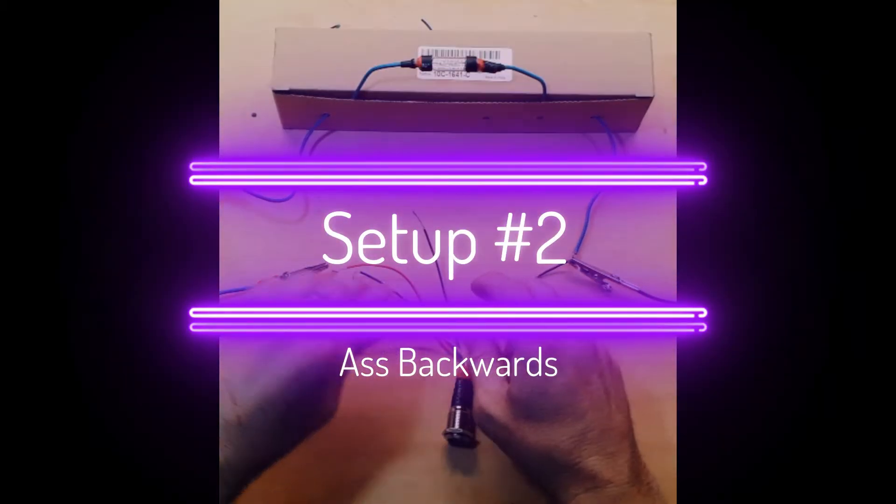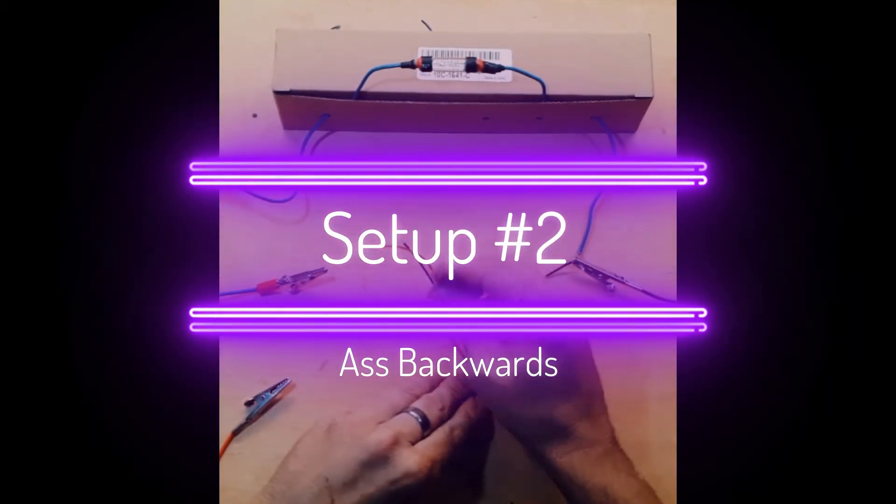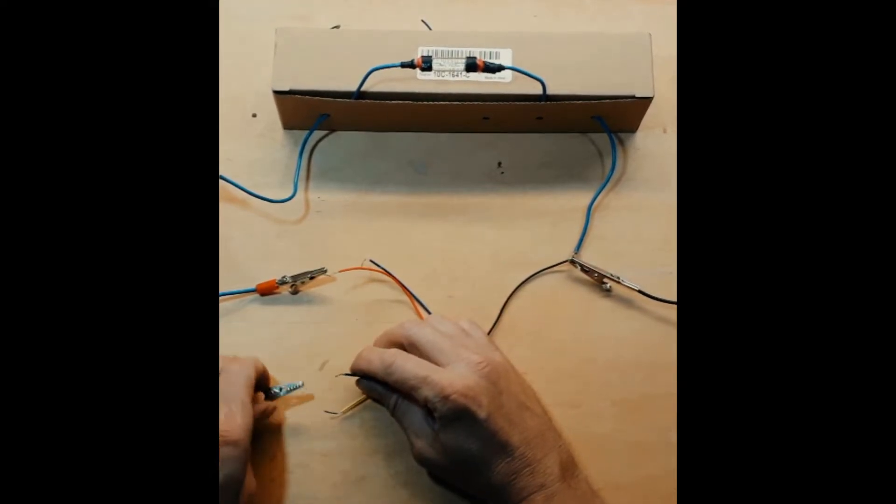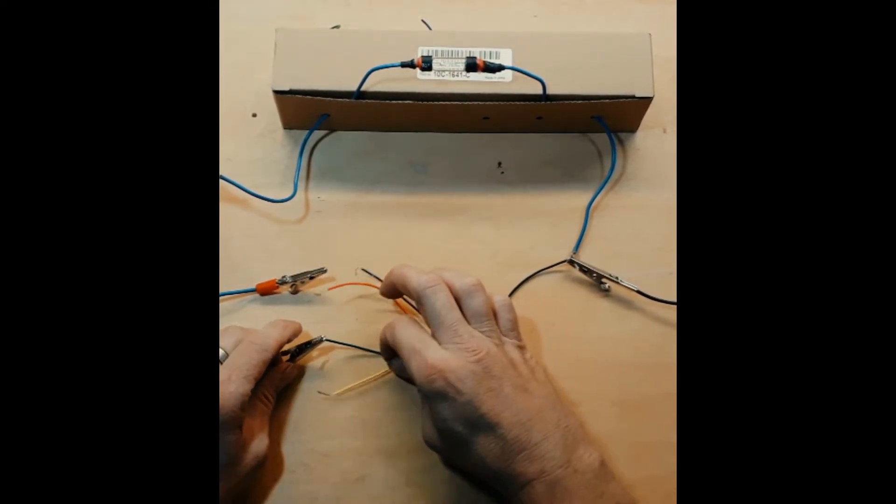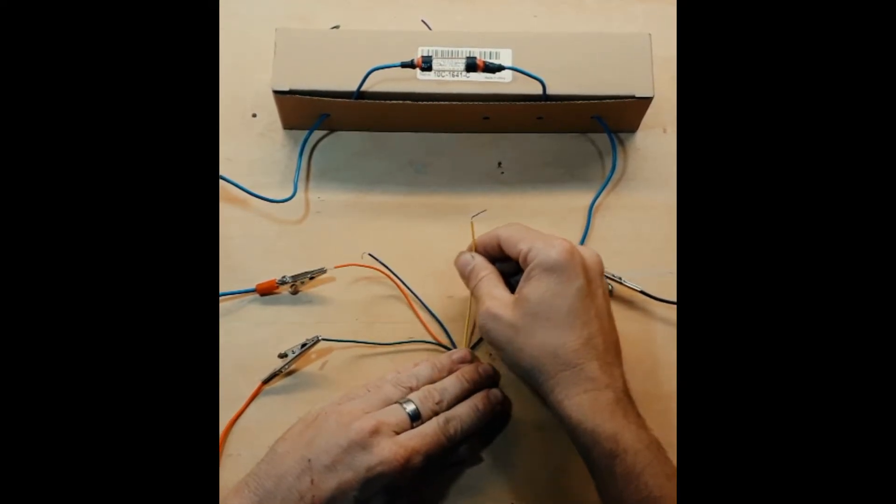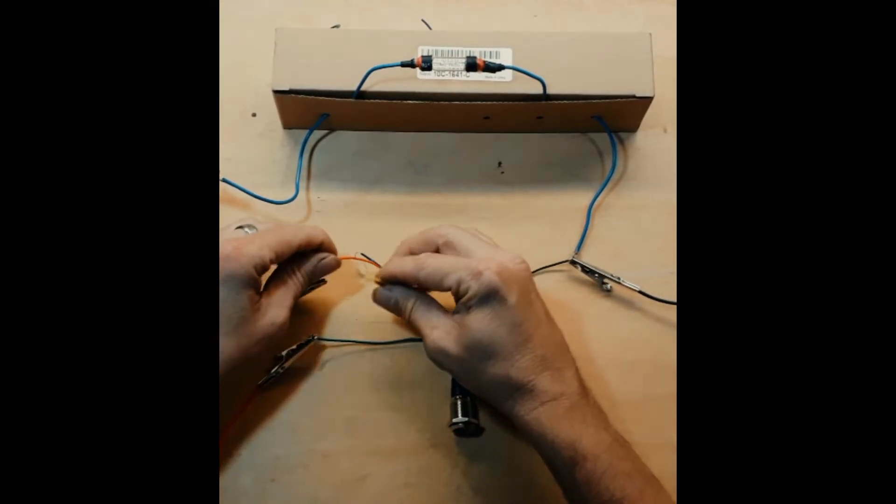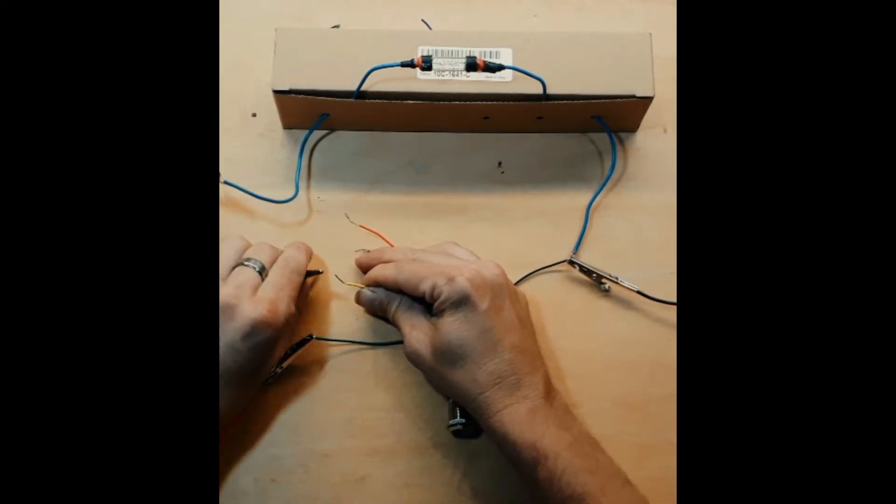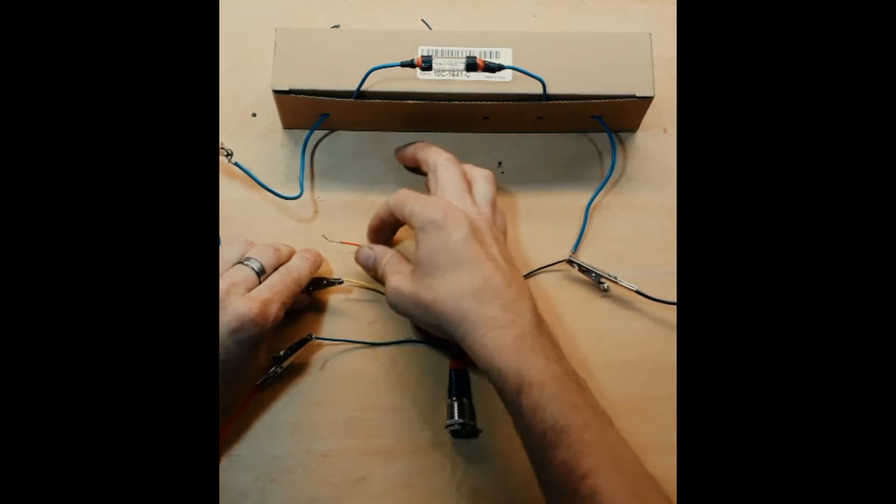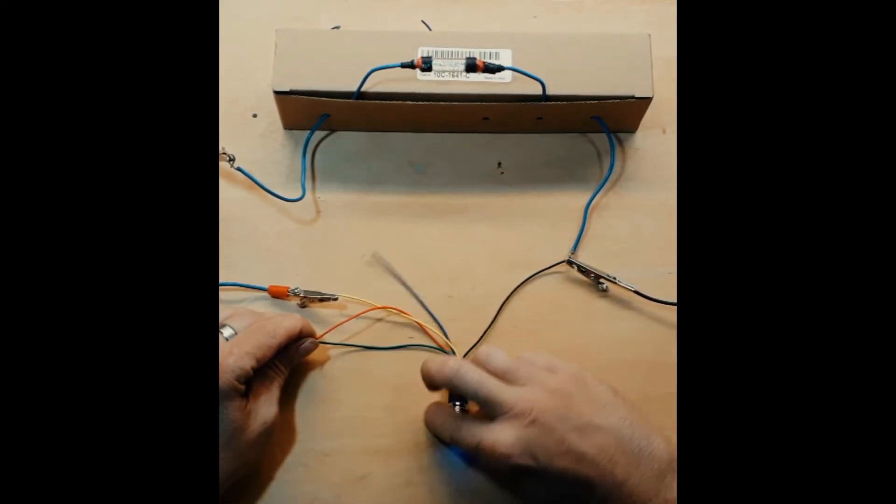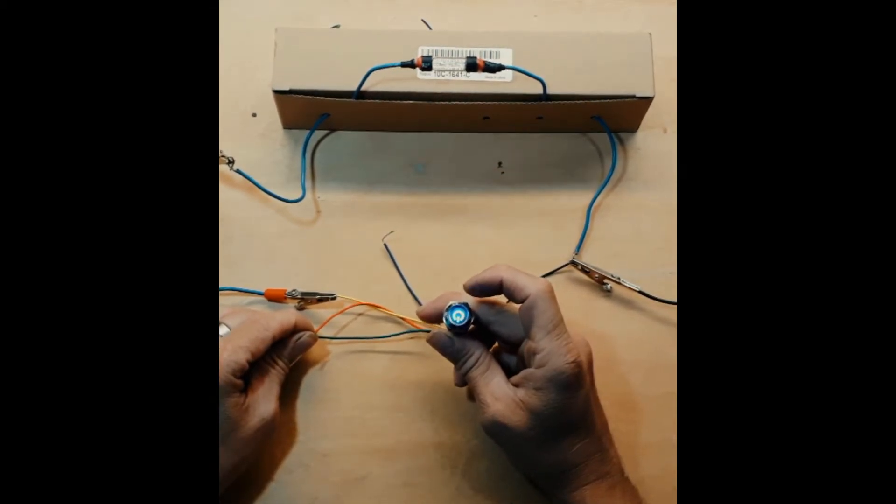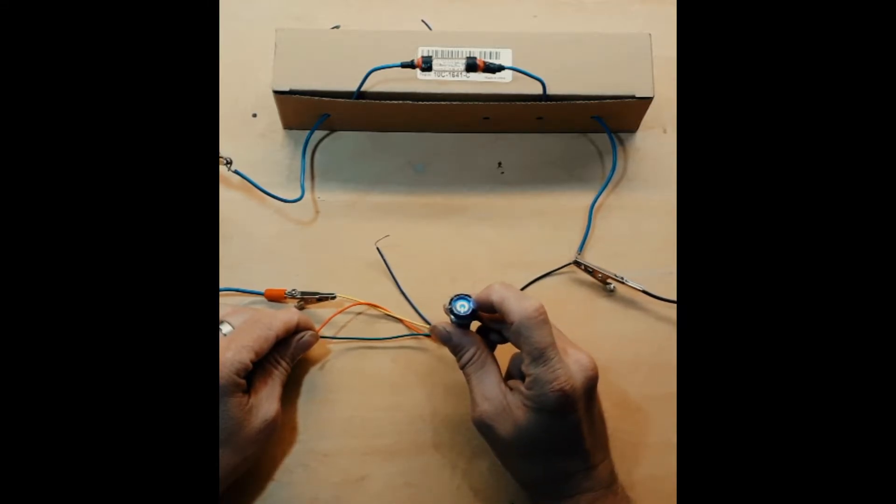The next way to wire this up, we will take the green wire and hook that directly to the battery. We will then take the yellow wire and put the yellow wire to the load. And, you can have the LED on all the time, or you can have it on when the switch is toggled.